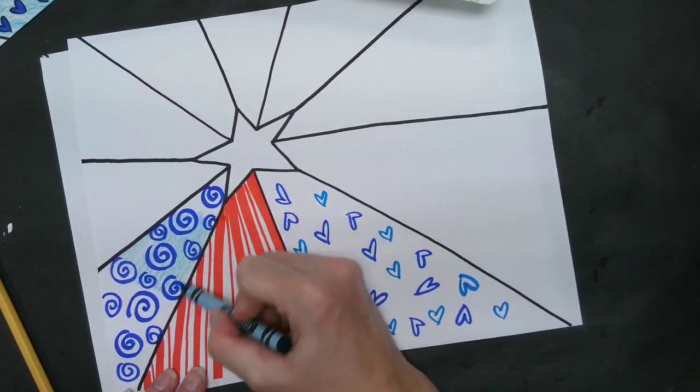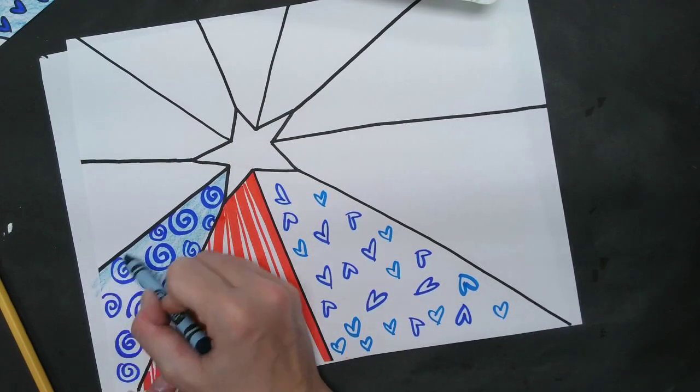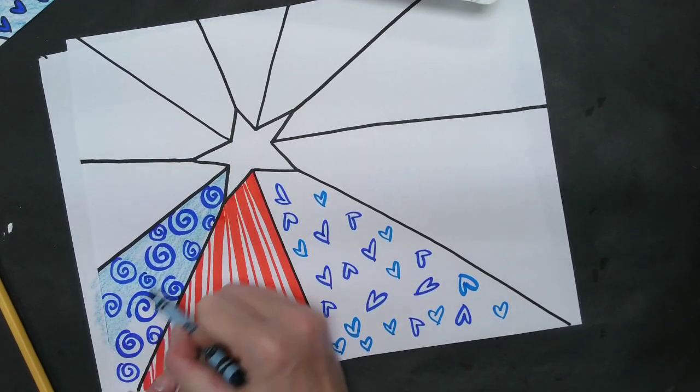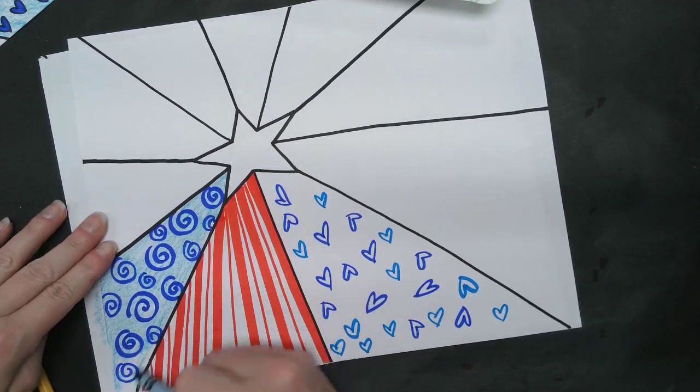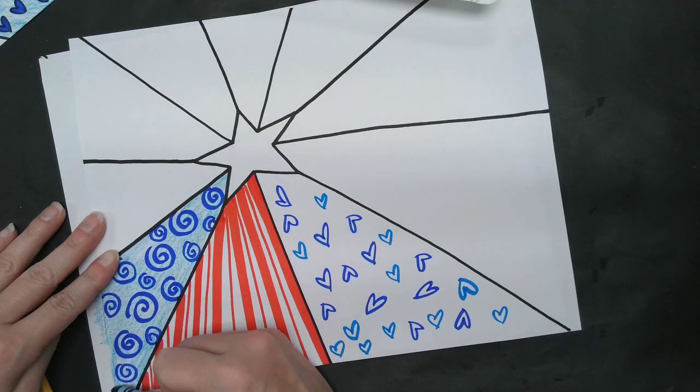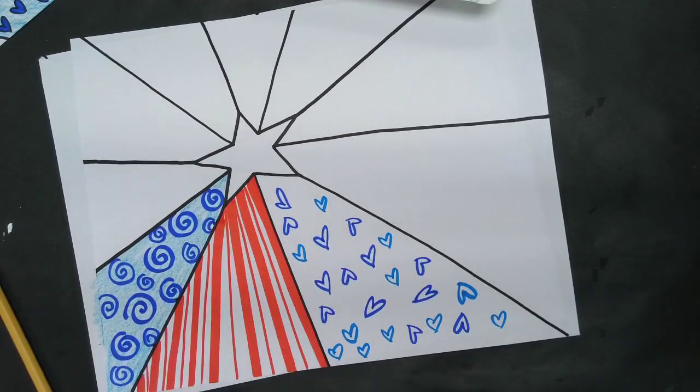So, I usually do marker first and then the crayon on top. So, you'll still be able to see the marker through the crayon. If you try to draw on top of crayons, sometimes marker doesn't want to work as well. So, I usually do the marker first since it's darker. That ink. Like that.